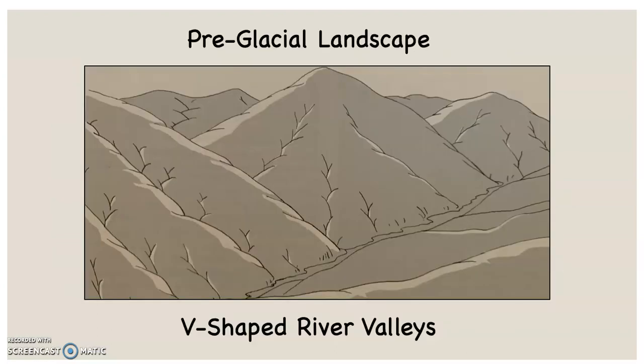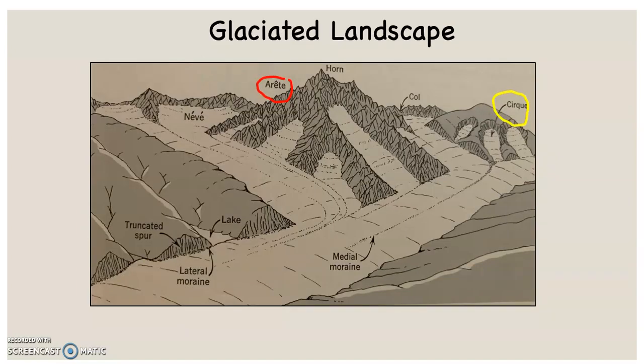If this is a pre-glacial landscape, you can see V-shaped river valleys before temperatures cooled off. Once temperatures cool off and enough snow accumulates to begin making glaciers, the landscape switches to something like this — a theoretical diagram. There are a number of features here; I've circled two of them: the cirques and the arete, which are those sawtooth peaks.